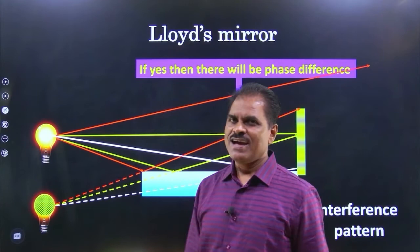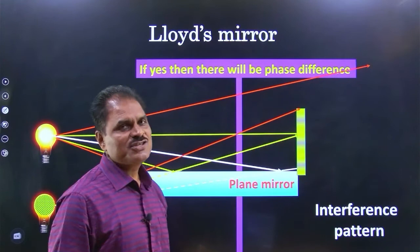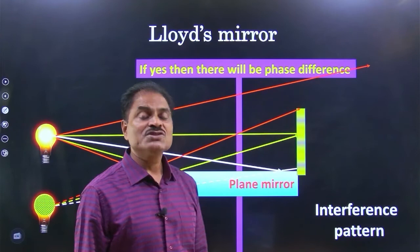यह interference pattern - यह constructive कहीं, कहीं destructive position मिलती है, कहीं bright point, कहीं dark point मिलता है. So this is how we use Lloyd's mirror to produce two coherent sources.